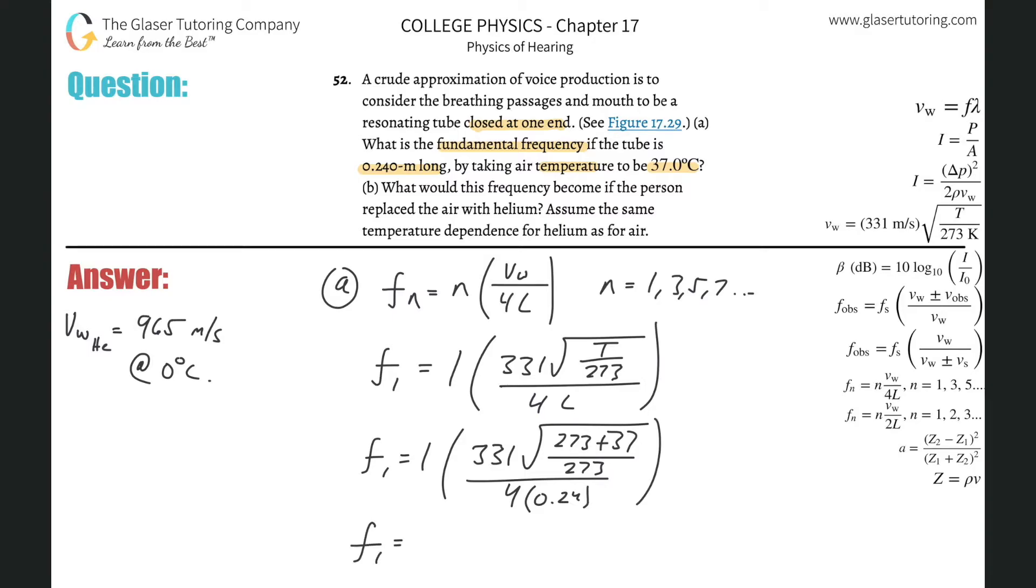Just simply plug that into the calculator now. So there's going to be 331 times square root, parentheses, 273 plus 37, divided by 273 all under that radical, and then divide that by parentheses four times 0.24. Close the parentheses. We get about 367 hertz. So that's the fundamental frequency. That takes care of letter A.